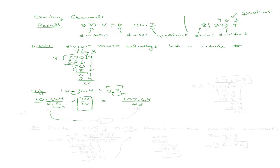Because I only multiplied by 1, whatever answer I get from the new problem will be the same as the original. That's the beauty of math — we can manipulate numbers this way to get the answers we need. So now my new division is 107 and 64 hundredths divided by 23. Even though they're different numbers than what I started with, my answer is going to be the same for the reasons I just explained.